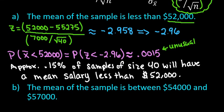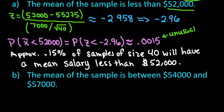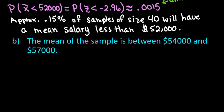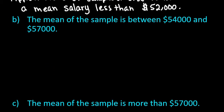It's much different if you're talking about a single person. For a single person, the likelihood of earning under $52,000 is much more likely than having an average of 40 people fall in that range.